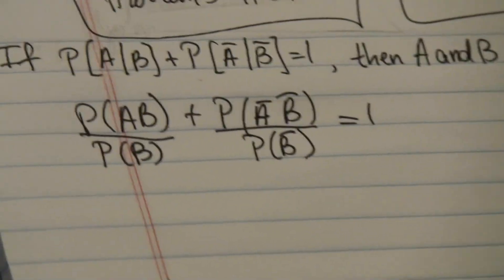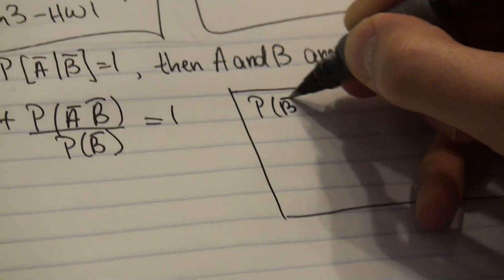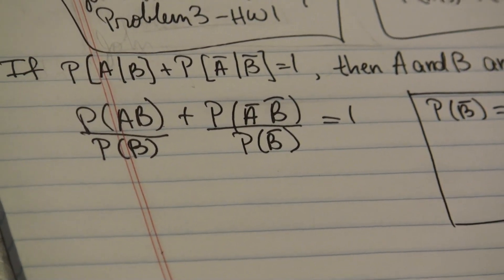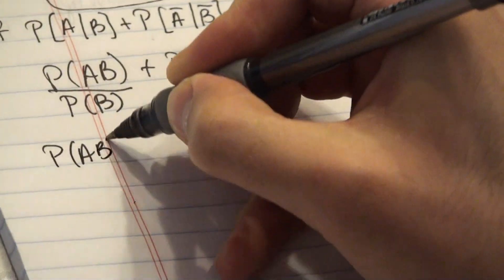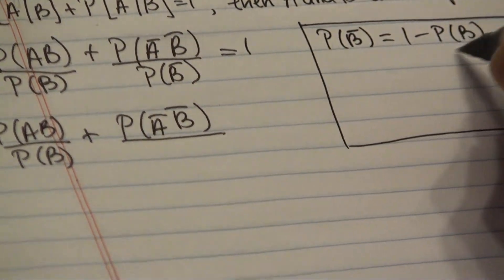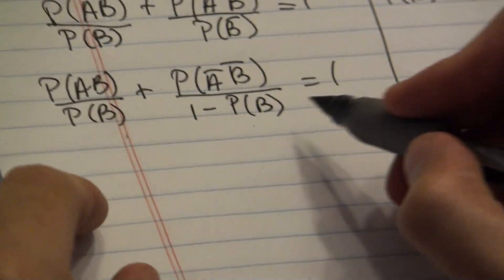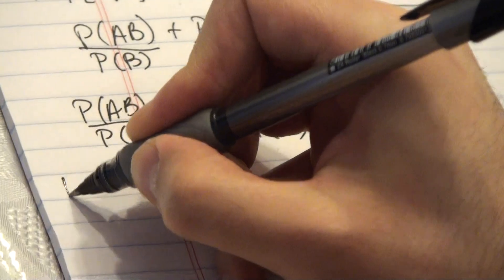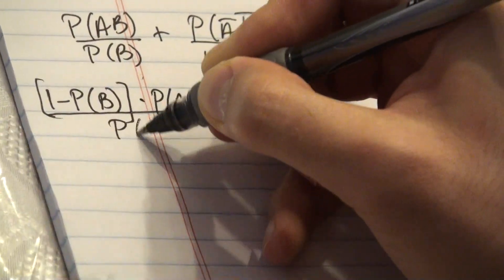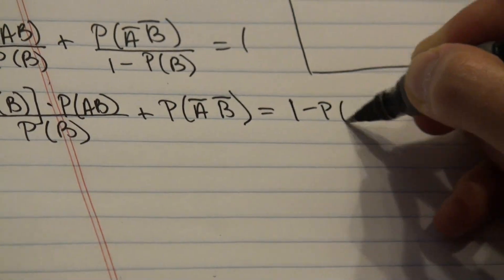Now I can rewrite certain things. I can rewrite the probability of B-not as 1 minus probability of B. I'm going to do that for this denominator. So we start here: probability of AB over probability of B, plus probability of A-not, B-not over 1 minus probability of B, and this still equals 1. Now I'm going to multiply both sides of this equation by 1 minus probability of B. So we get 1 minus probability of B times probability of AB over probability of B, plus probability of A-not, B-not, which equals 1 minus probability of B.